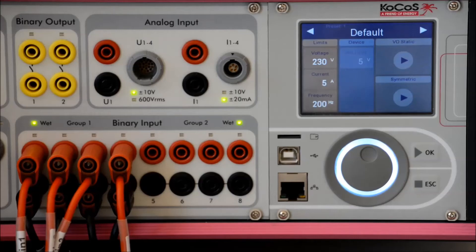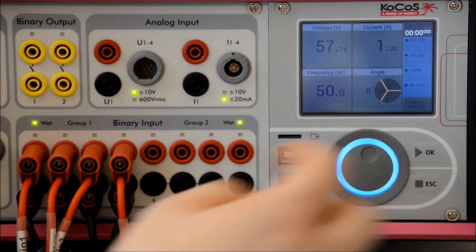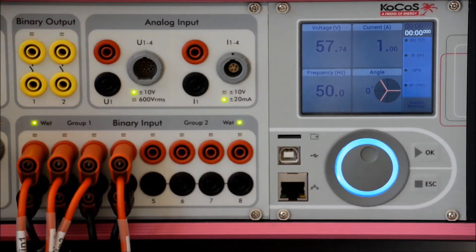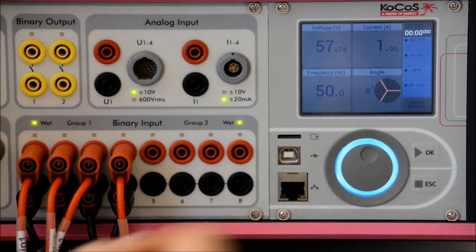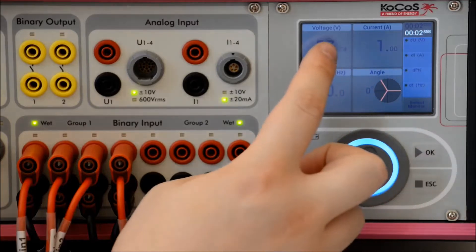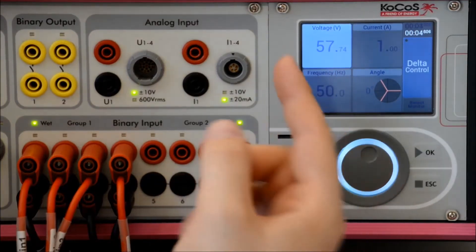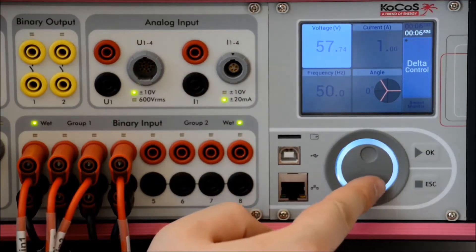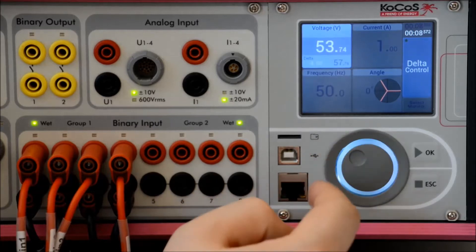For simple controlling and operation, we have created the symmetric monitor. In this monitor, you have access to voltage, current, system frequency and the angle between voltage and current. The controlling is done by using the jog dial and our smart touch technology. As you see, I select the voltage, which is now highlighted, and then I simply use the jog dial to change its value.